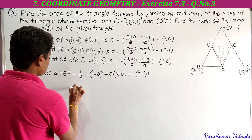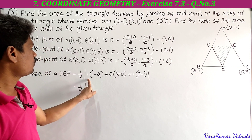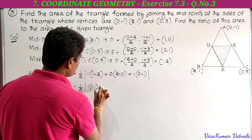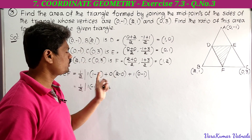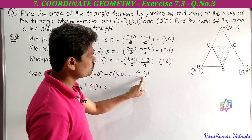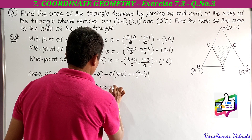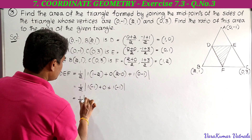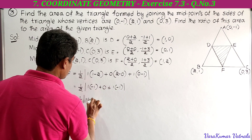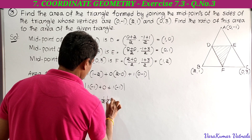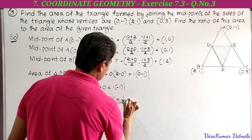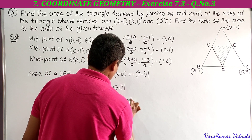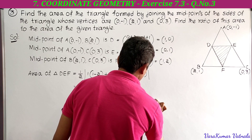Simplifying: half times modulus of (1 times -1) + 0 + (1 times -1) = half times modulus of -1 + 0 + (-1) = half times modulus of -2. Removing the modulus gives +2, so the area equals half times 2 = 1 square unit. The area of triangle DEF is 1 square unit.